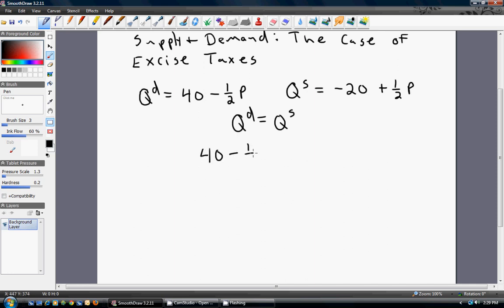Quantity demanded is 40 minus one half P. Quantity supplied is minus 20 plus one half P. We got one equation and one unknown, so let's solve for the P.